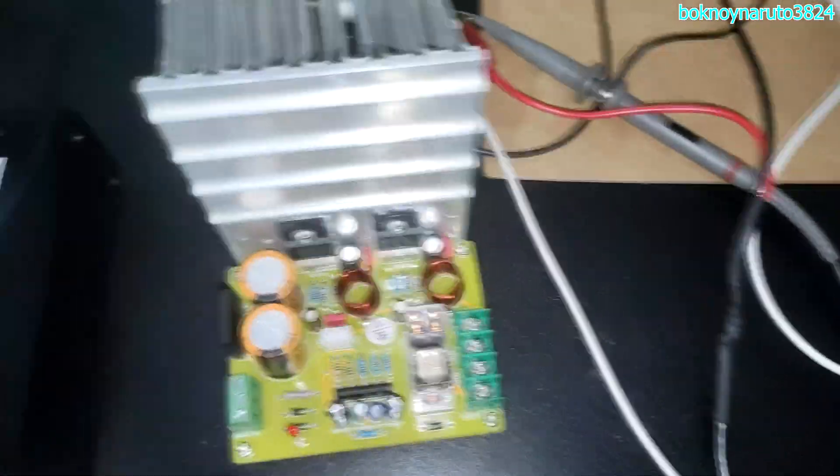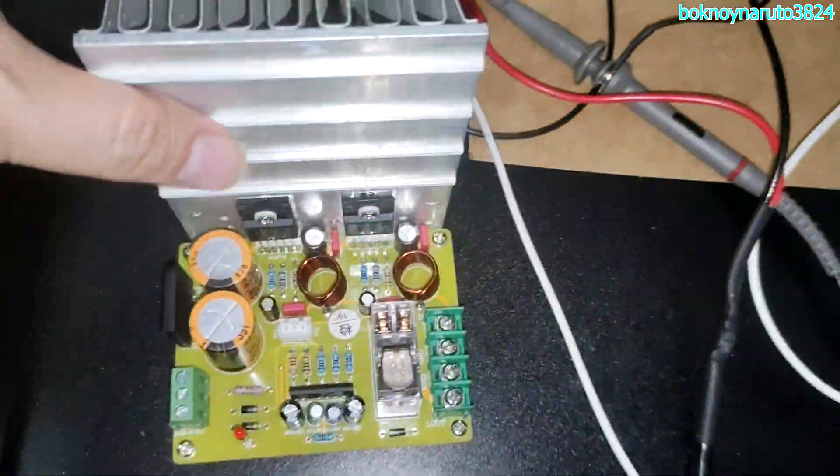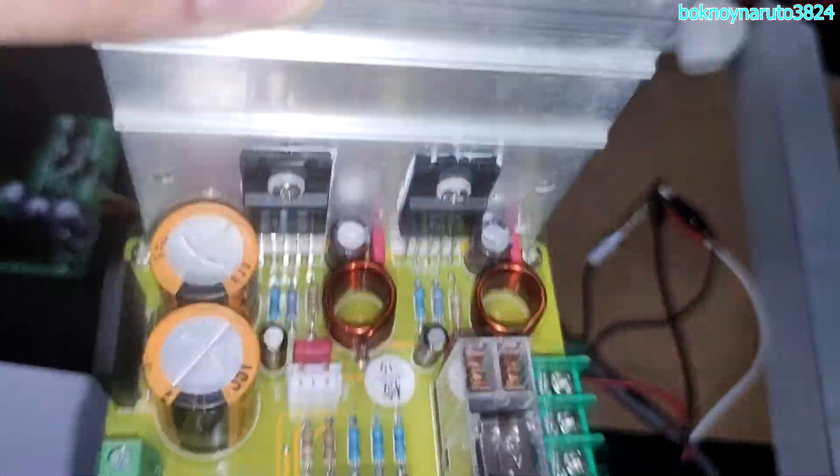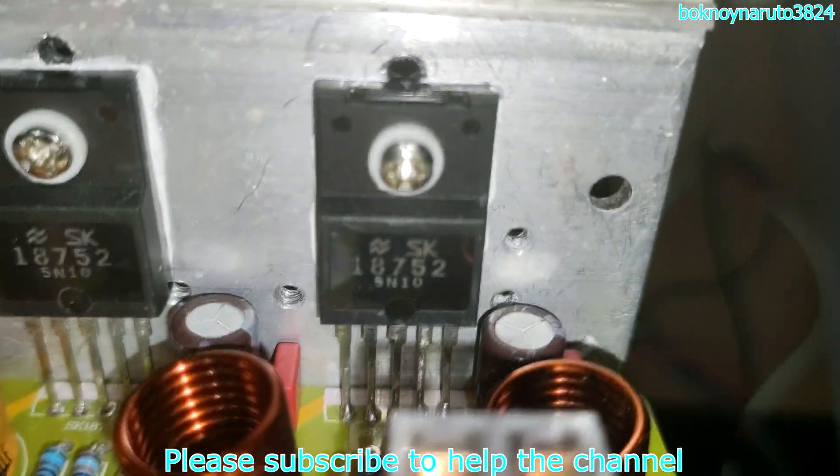Today we're going to look at this generic SK18752 amplifier board from Aliexpress. This is the board here. This is a chip amp 18752.